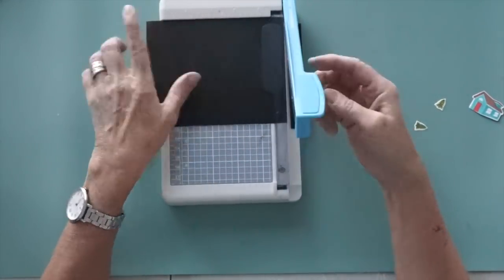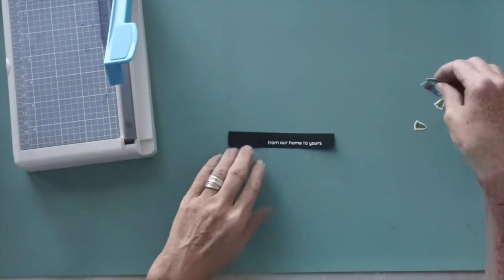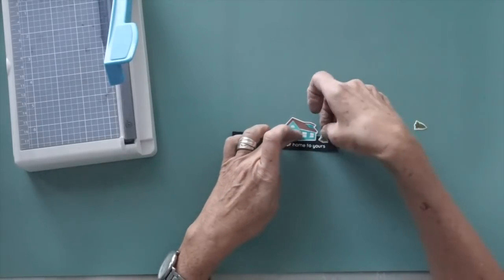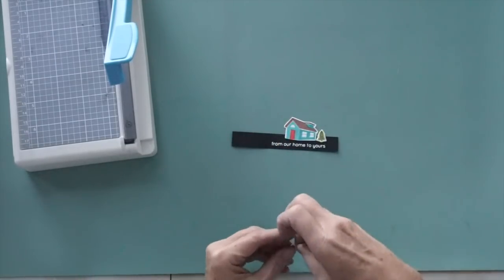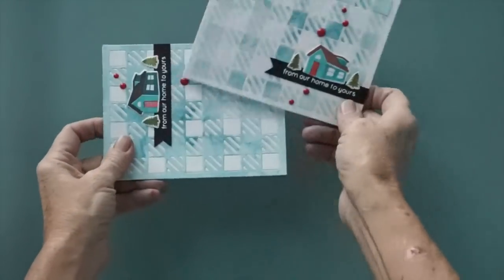After arranging the house and the little trees onto the black sentiment strip I cut a little fishtail on the left and adhered everything to the card front. I added some red enamel dots and there are the cards for today.